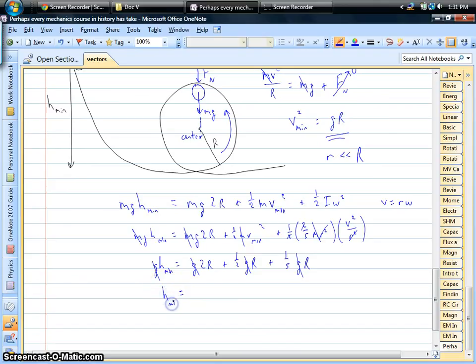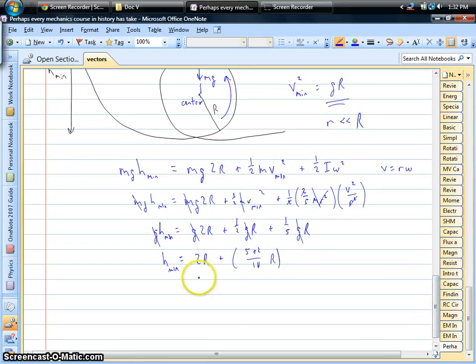So our height, that minimum height, is twice the radius, one-half and one-fifth. Let's see, that's going to be a common denominator of ten. So five plus two over ten times the radius of the loop. That's seven-tenths. We end up with 2.7 times the radius of the hoop.